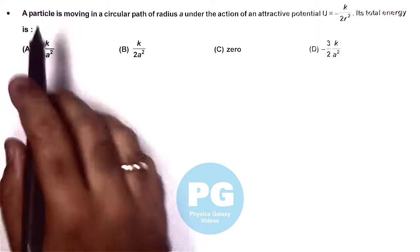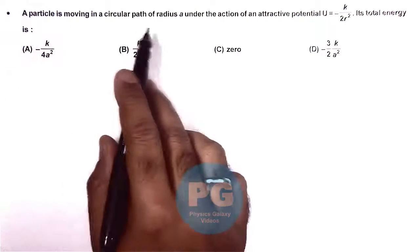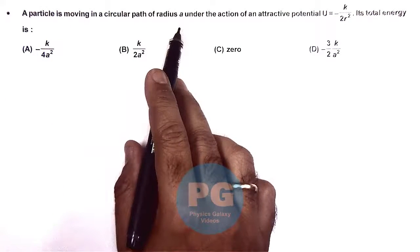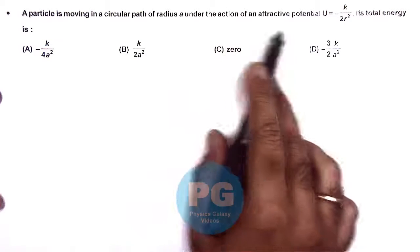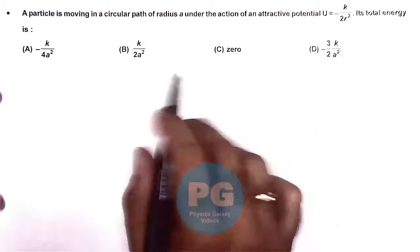In this question, a particle is moving in a circular path of radius A under the action of an attractive potential U = -K/(2R²).